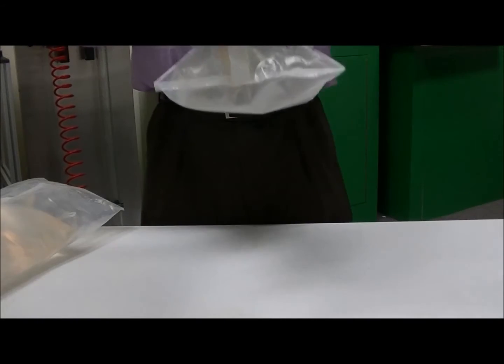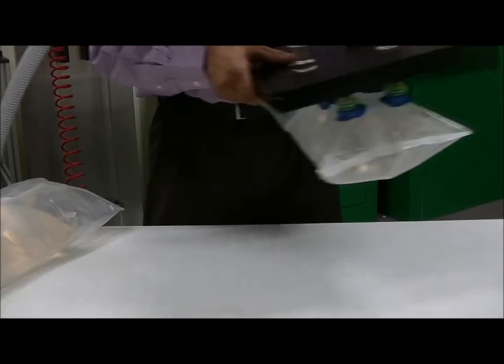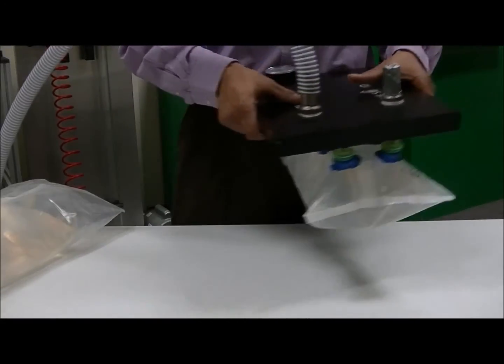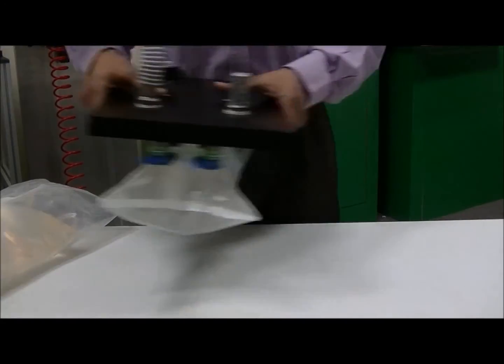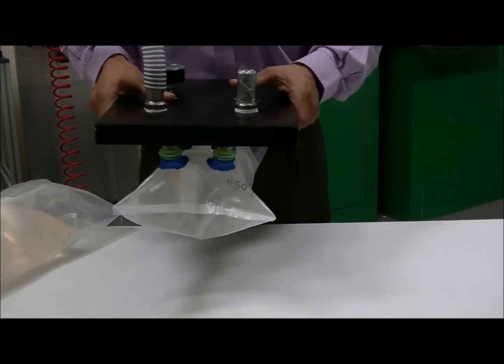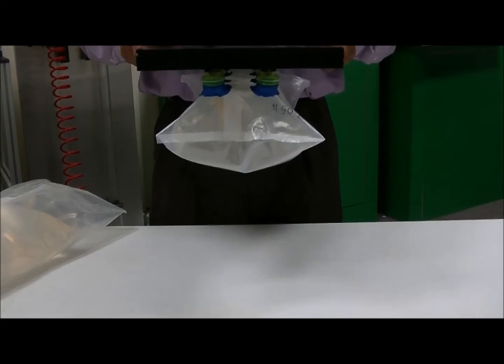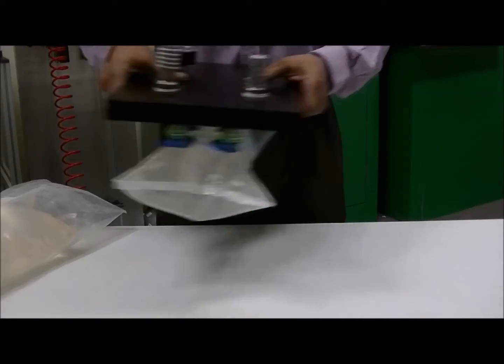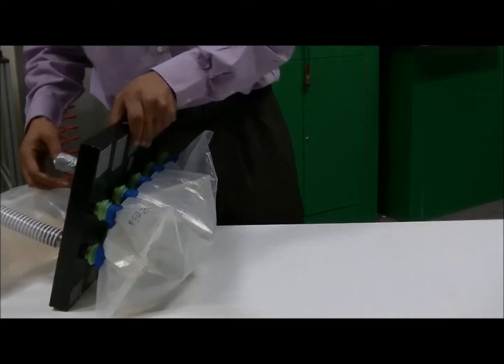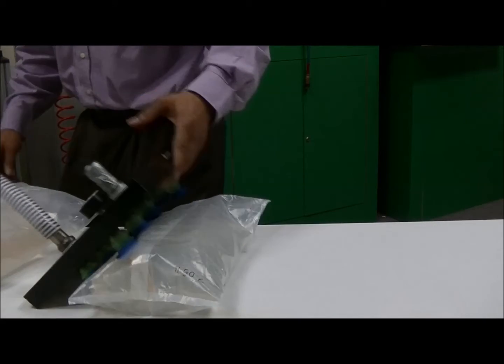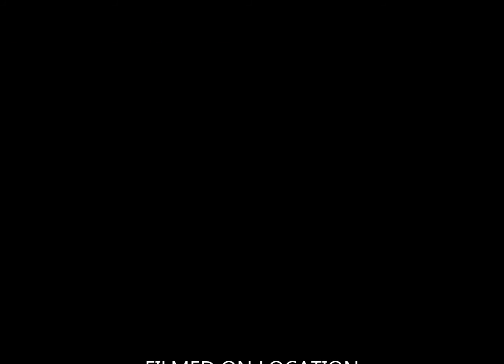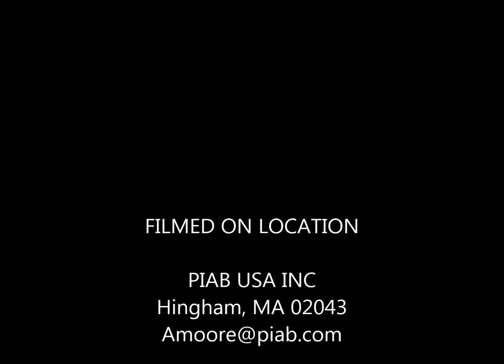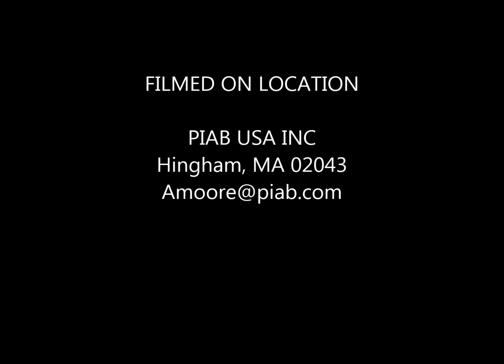And we demonstrate the same thing on the smaller size. This is a seven-pound bag. Now you can hear that one of the cups isn't making a good seal; however, the others are still maintaining their grip on the bag, which is good.